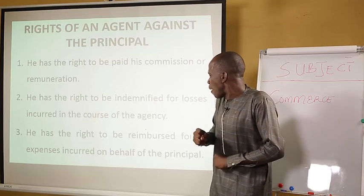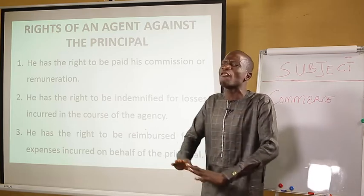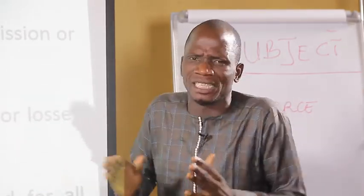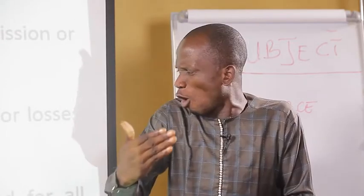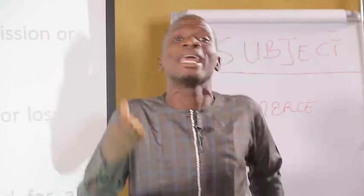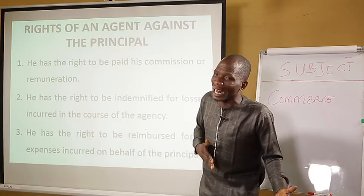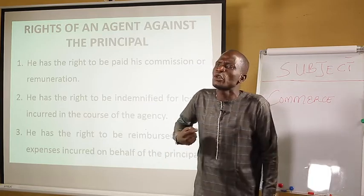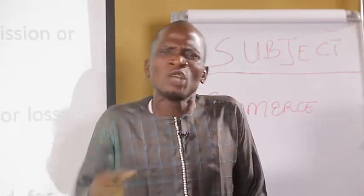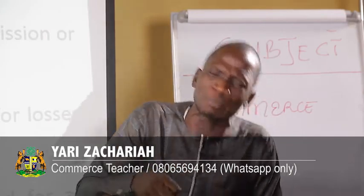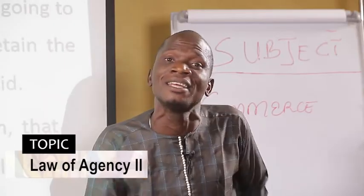Three, he has the right to be reimbursed for all expenses incurred on behalf of the principal. Reimbursement and indemnity are two different things. Indemnity may come in time of misfortunes, but reimbursement refers to expenses you've made on behalf of your principal. You incurred some expenses in the course of running the agency — things needed to be put in order and the principal was not around. You used your own money, so at the end of the day you have a right to tell the principal to reimburse you.